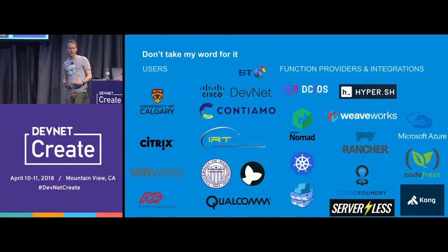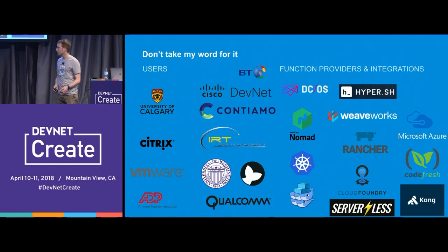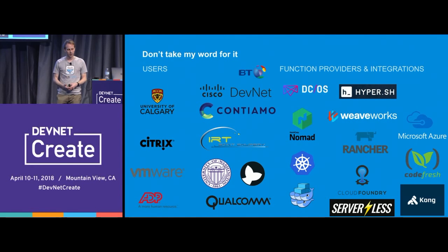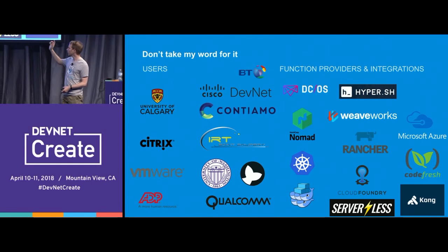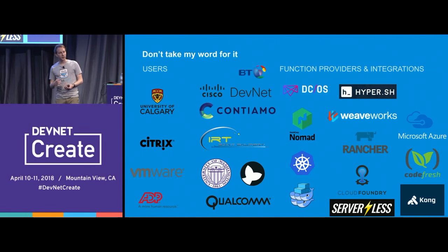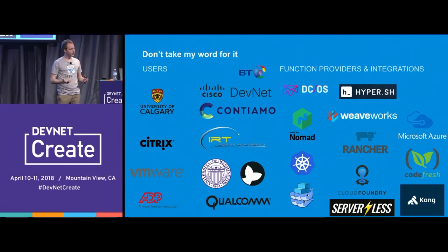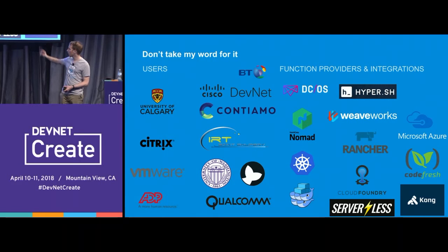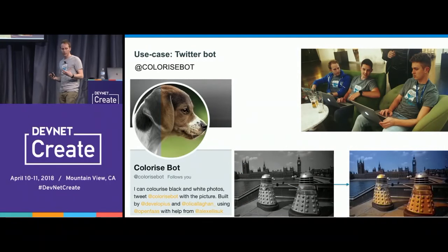There are a whole bunch of people who have started to use OpenFaaS for various reasons, and we have lots of integrations. Some have been built by companies, some by individuals in the community. An example from a company is HashiCorp's Nomad — a container scheduler like Kubernetes. Nick Jackson, a developer advocate there, created a backend for OpenFaaS. We also have backends for Docker Swarm and DCOS.